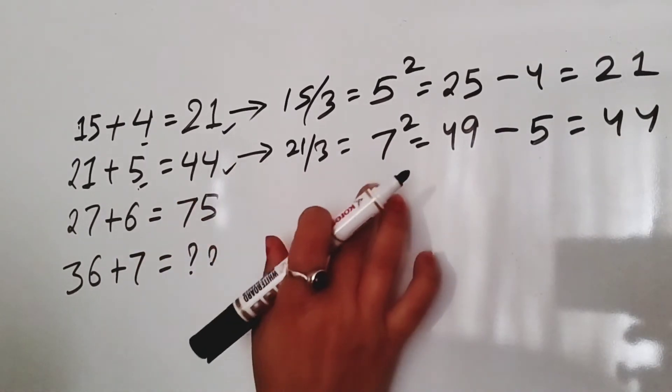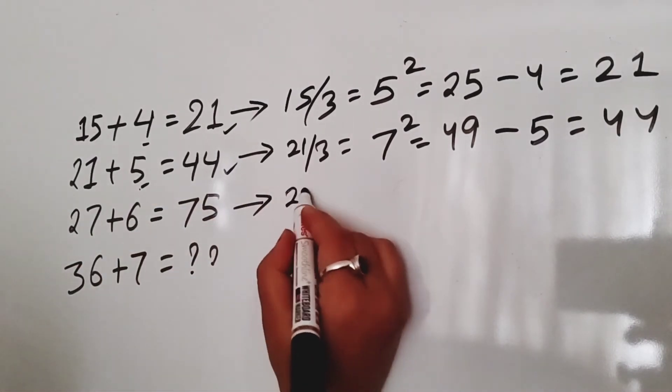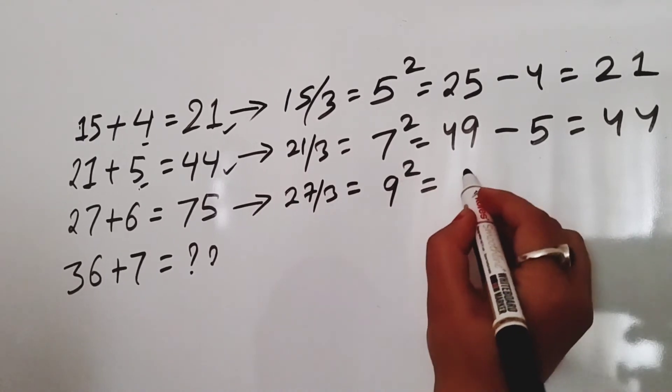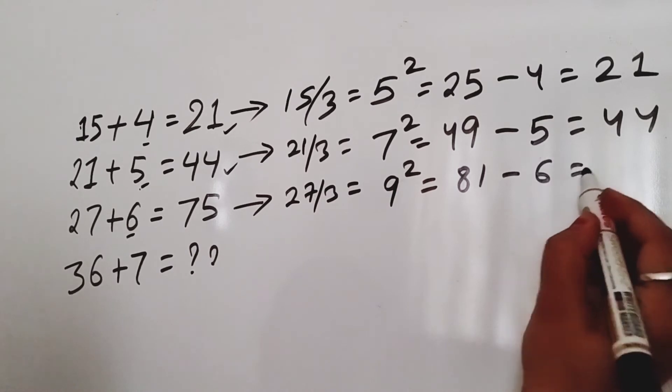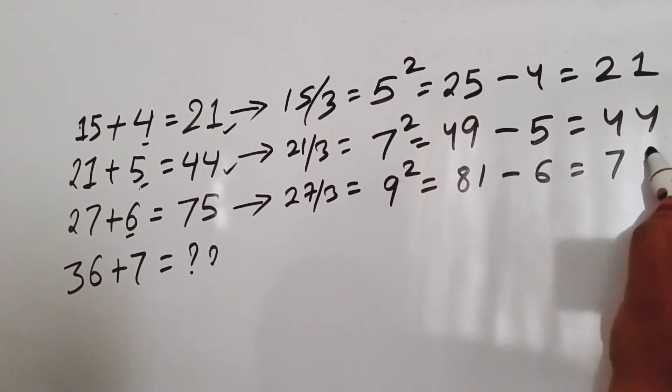The second row gives us 44. Third row check: 27 divided by 3 is 9. 9 squared is 81. Minus the second number 6 gives us 75.